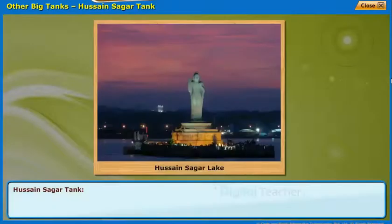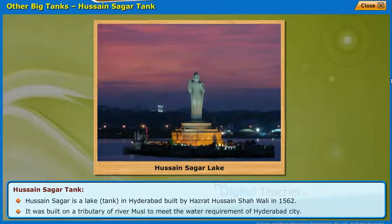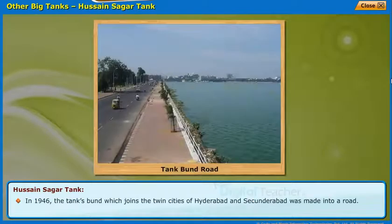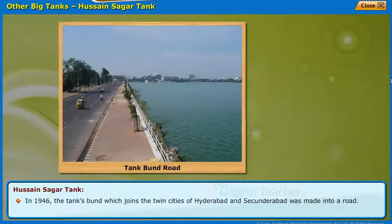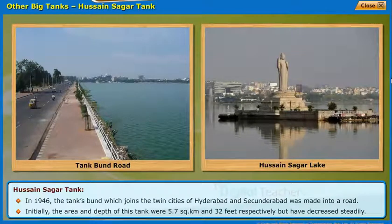Hussein Sagar is a lake tank in Hyderabad, built by Hazrat Hussein Shah Wali in 1562. It was built on the tributary of River Musi to meet the water requirement of Hyderabad city. In 1946, the tank's bund which joins the twin cities of Hyderabad and Secunderabad was made into a road. Initially, the area and depth of this tank were 5.7 km² and 32 feet respectively, but have decreased steadily.